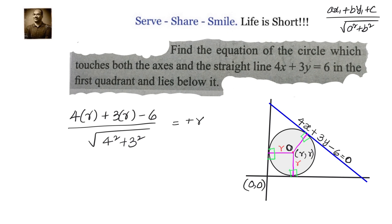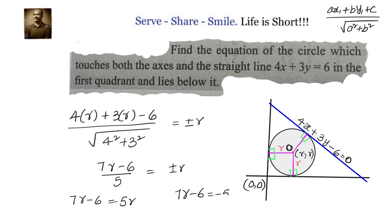Calculating this, we have 4r plus 3r minus 6 divided by the square root of 4 squared plus 3 squared, which gives 7r minus 6 by 5 equals to plus or minus r. So we have two options: one is 7r minus 6 equals 5r, giving r equals 3; and the other is 7r minus 6 equals minus 5r, giving r equals 6 by 12, which is 1 by 2.